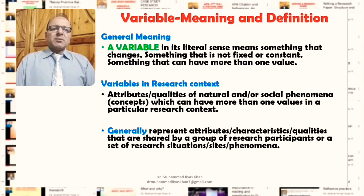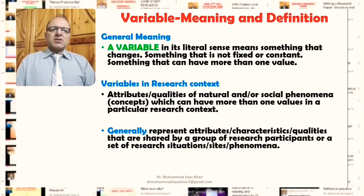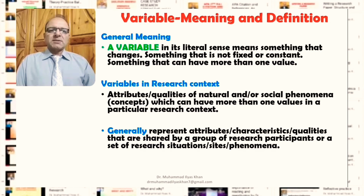A variable in its general meaning refers to something that changes, something that is not fixed or constant, or something that can have more than one value. Generally in the research context, variables can be considered as attributes and/or qualities of natural and/or social phenomena — concepts that can have more than one value in the particular research context in which these variables have been used.